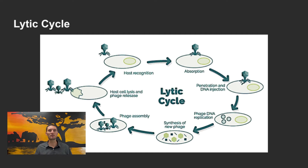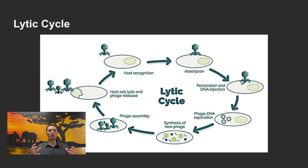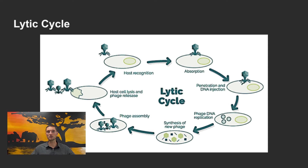How the lytic cycle works: proteins in the tip of the virus attach to a host cell. The DNA enters through the pores of the virus into that cell. The virus DNA replicates, and that viral DNA is transcribed to make viral proteins — initially used to replicate the DNA, then to form the actual components of the virus: the head and the tail. These components self-assemble, each with one copy of DNA, forming new viral capsules inside the host cell. The viral proteins then make holes in the host cell membrane during lysis, and the viruses burst out to infect other cells, becoming more severe over time.